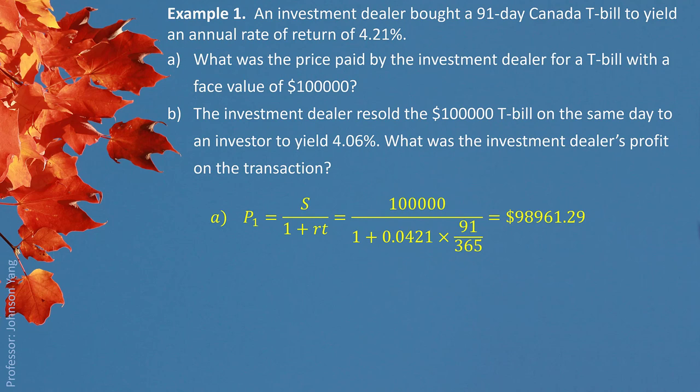Part B: The investment dealer resold the $100,000 Treasury Bill on the same day to an investor to yield 4.06%. You need to understand the background — Treasury Bills are issued by the government but in limited quantity. If it's a hot investment and sells out, some investors may have to buy from other investors.